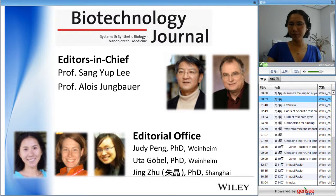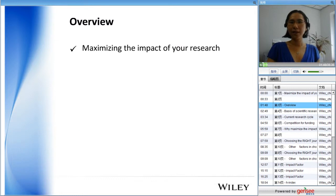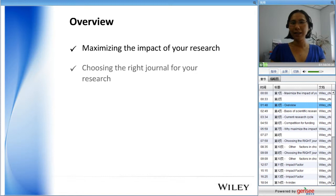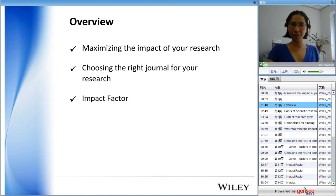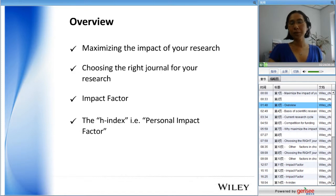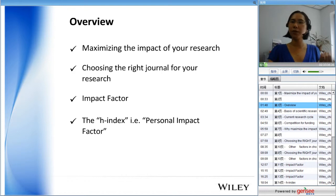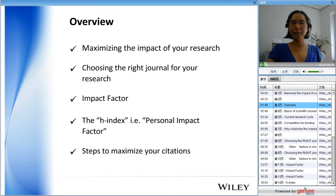Here is an overview of my presentation. I want to talk about the reasons why you need to maximize the impact of your research, and the role of choosing the right journal. I'll also explain the impact factor and how you can use it to your advantage. I'll briefly touch on the H-Index — think of it as your personal impact factor — and finally, the steps you need to maximize your citations.